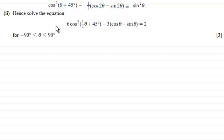And now we're being asked to hence solve the equation 6cos²(½θ + 45°) - 3(cos θ - sin θ) = 2, for θ greater than -90° but less than 90°.